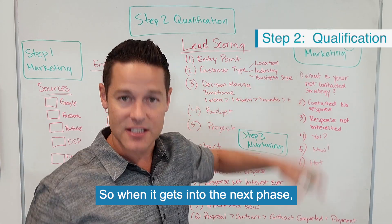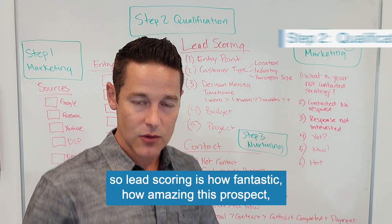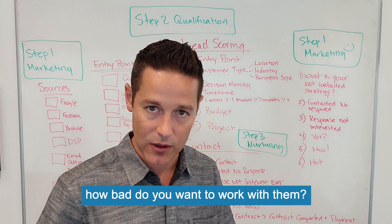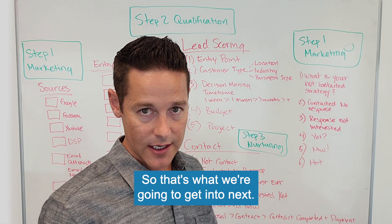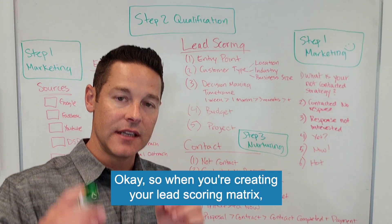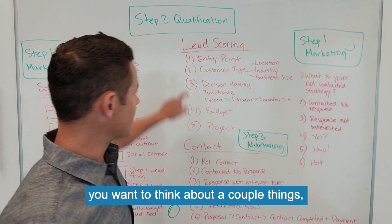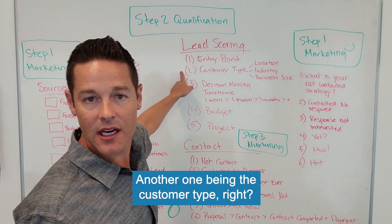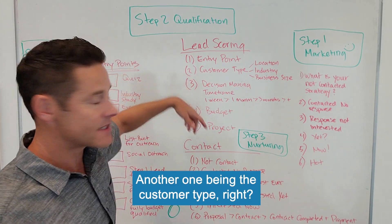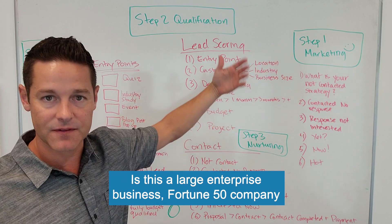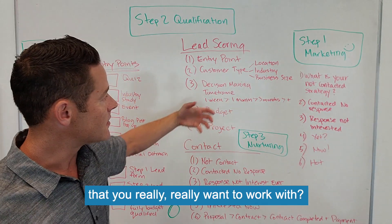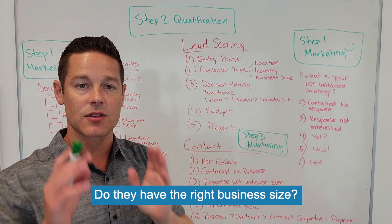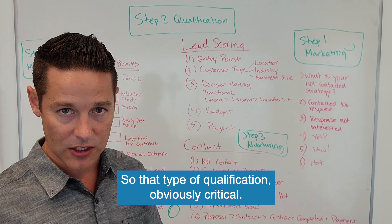When it gets into the next phase, you think about lead scoring — how fantastic and amazing this prospect is, how bad do you want to work with them. When creating your lead scoring matrix, think about the entry point, the customer type — is this a large enterprise business, a Fortune 50 company? Are they in the right location, the right industry, the right business size? That type of qualification is obviously critical compared to somebody who's just starting out and doesn't have a good business set up yet.